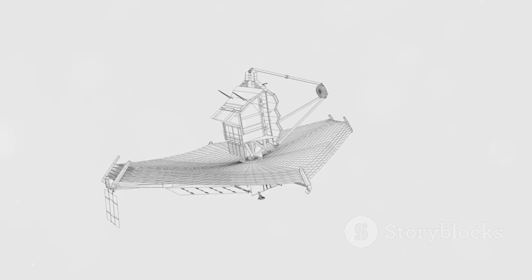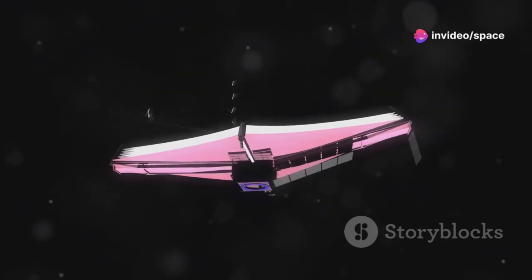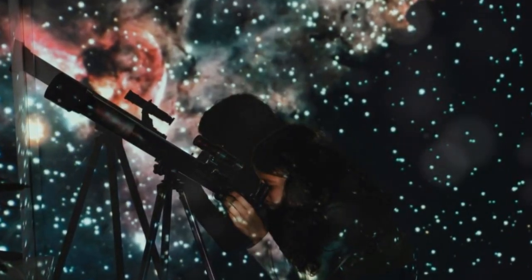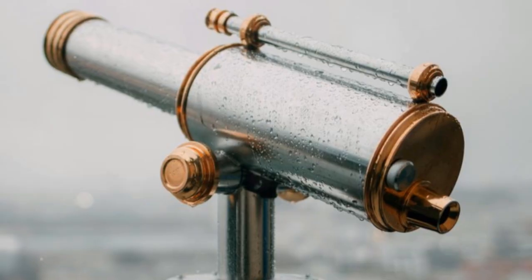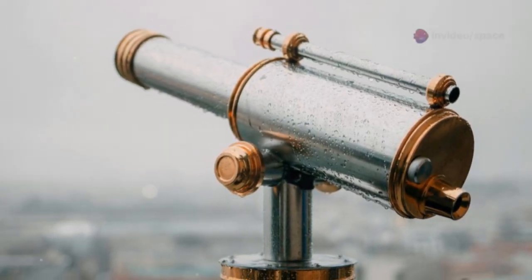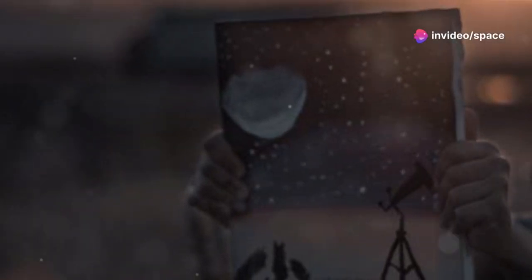The development of the telescope in the 17th century marked a turning point in our exploration of the cosmos. This revolutionary instrument allowed astronomers to see further and with greater clarity than ever before. Galileo Galilei, one of the pioneers of this new technology, made groundbreaking discoveries that forever changed our view of the universe. His use of the telescope revealed details of celestial bodies that had never been seen before.